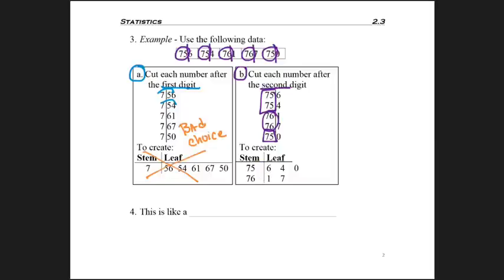And then I start listing my leaves. So the way that that works is after a 75, I put a 6. After 75, I put a 4. After 76, I put a 1. After 76, I put a 7. After 75, I put a 0.